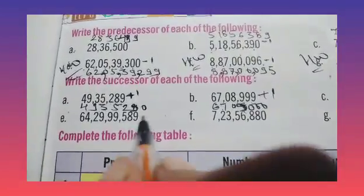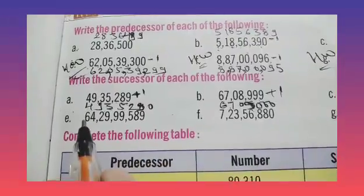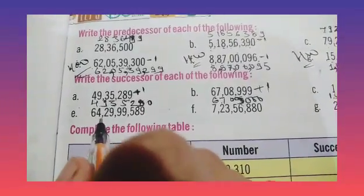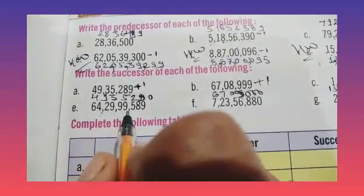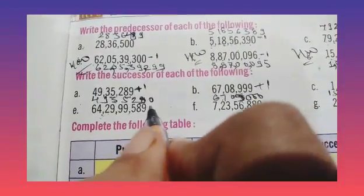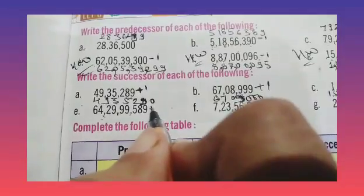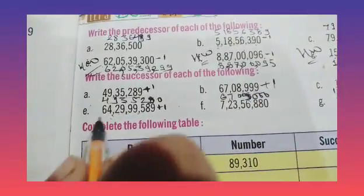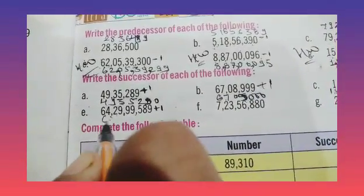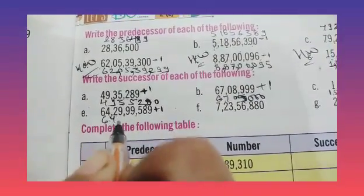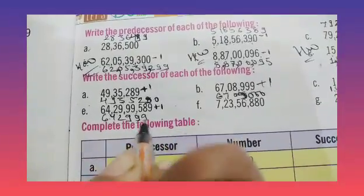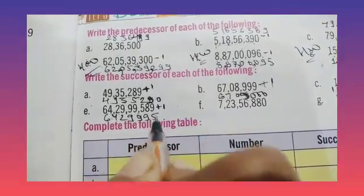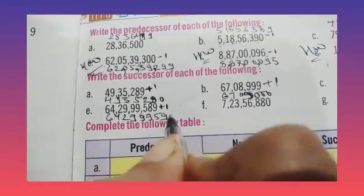Now part E: 64 crore 29,99,589 is given. If we add one number, it becomes 64 crore 29,99,590.